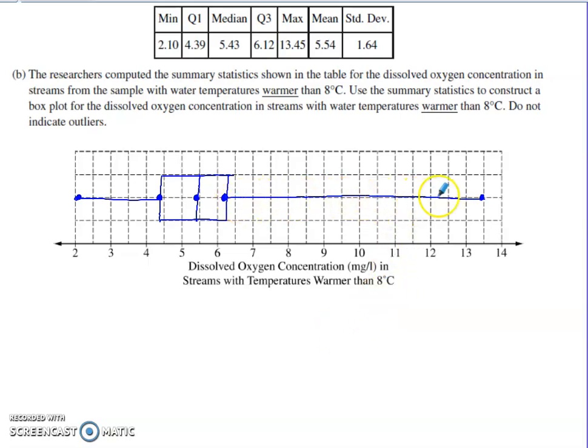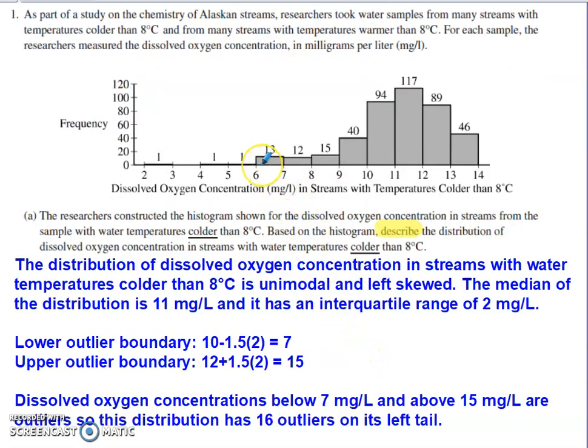We have the upper 25% of the data spread out from 6.12 onward to the maximum of 13.45. But if you come back to this, 6.12 would be somewhere in here. So if we just consider those outliers that we ruled out from the lower end of this data back in part A, we have 12, 15, 40, 94—all of these values are sitting above the upper quartile for the streams with the warmer temperatures. So it seems just based on that argument that we're going to have the colder streams being the ones that are healthier for wildlife.